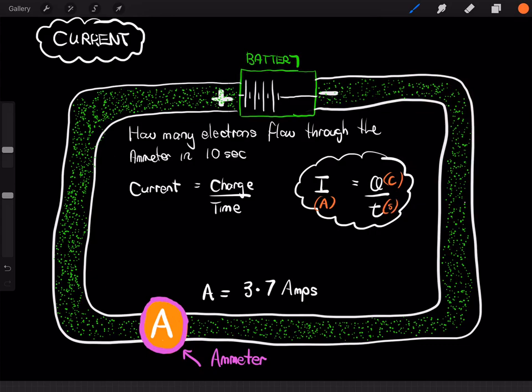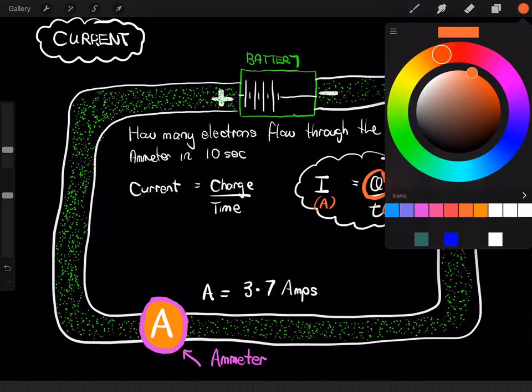So, we want to work out how many electrons. Well, in order to do that, we need to work out how much charge has flown through the circuit. So, we need to rearrange our formula so that Q is the subject. So, let's go ahead and do that.